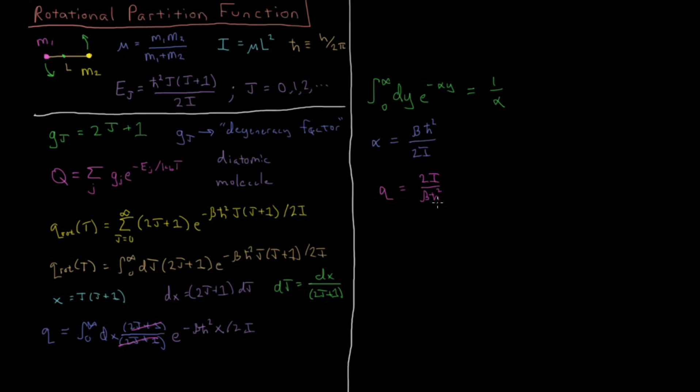Since we have this h-bar squared here, we know that's h over 2 pi, so 1 over h-bar squared is 2 pi over h squared. So there's a 4 pi squared we could substitute up in the numerator. We could equivalently multiply this by 4 pi squared and get 8 pi squared i over beta h squared.